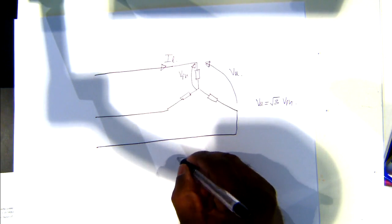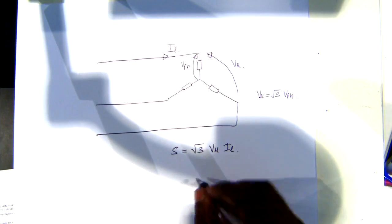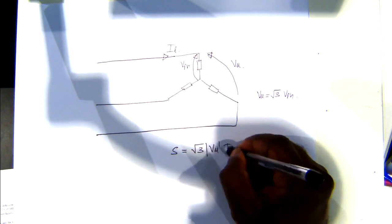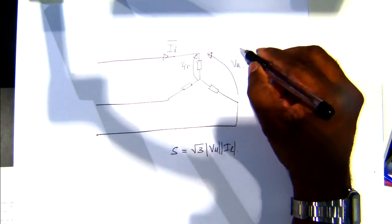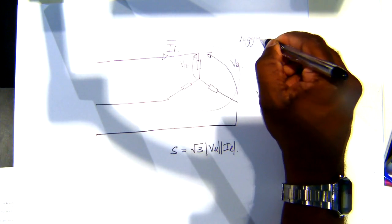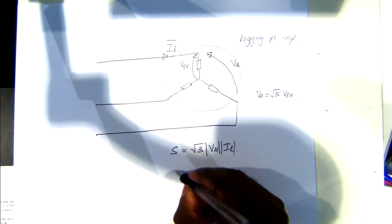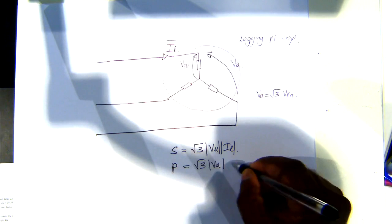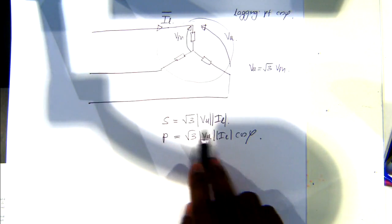If you have a certain line current, you can write the apparent power for this whole thing. S will be root three times the line-to-line voltage times I_line — that's the apparent power, and this is just the magnitudes. Then if you know the power factor — say a lagging power factor, cos phi — then your real power will be root three times V_line-to-line times I_line times cos phi. That's apparent power multiplied by power factor.